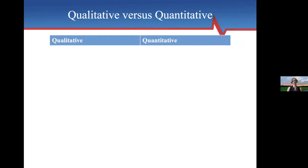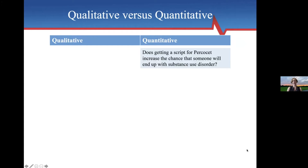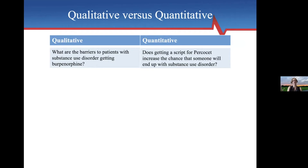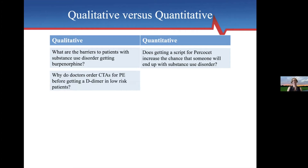A couple of ways to think about whether to use a qualitative or quantitative approach: think about your question and how you phrase it. For example, 'Does getting a script for Percocet increase the chance someone will end up with substance use disorder?' — that's an association or cause-and-effect, needing numbers. Whereas the qualitative version might be, 'What are the barriers to patients with substance use disorder getting buprenorphine?' — that's something we want to explore. Similarly, 'Why do doctors order CTAs for PE before getting a D-dimer in low-risk patients?' is a qualitative question; we're not asking how many, we're asking why.